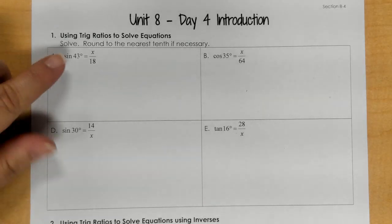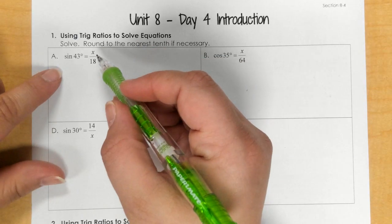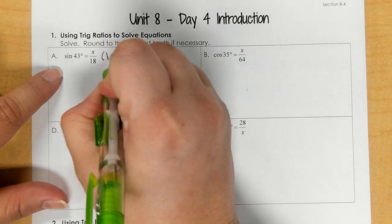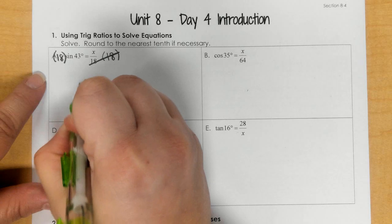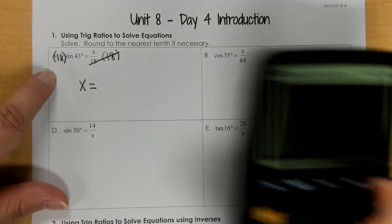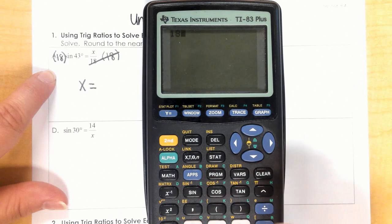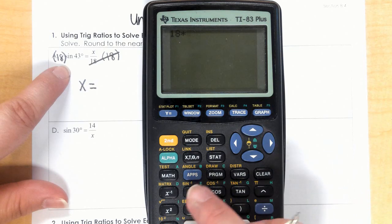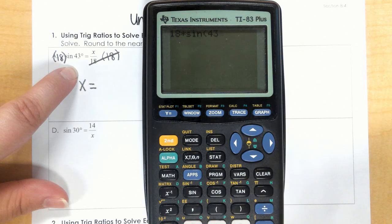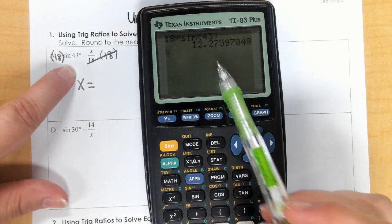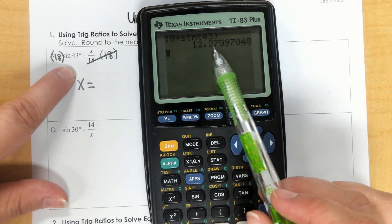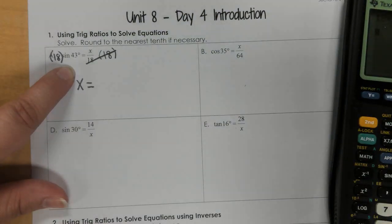So what I'm going to do here to get x by itself is that I am multiplying both sides by 18. So this would say 18 times sine of 43 degrees, close the parenthesis, enter. It does say round to the nearest tenth, so 12.2 would become 3. So 12.3.